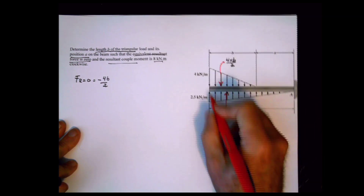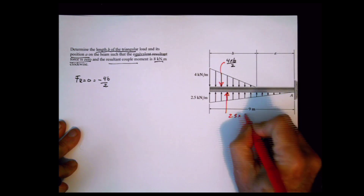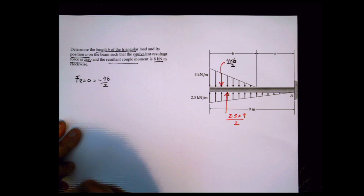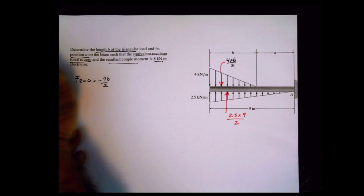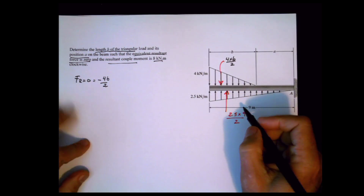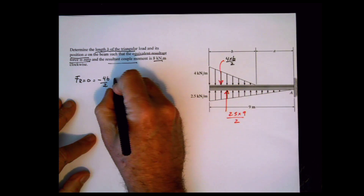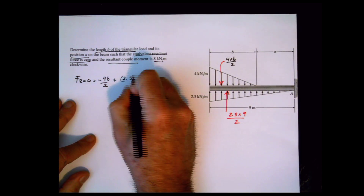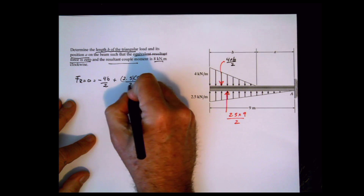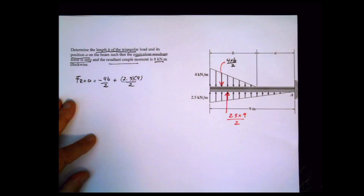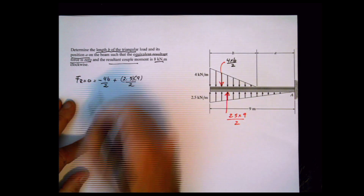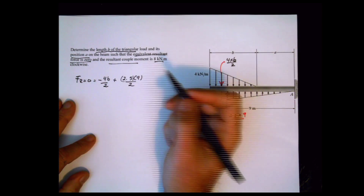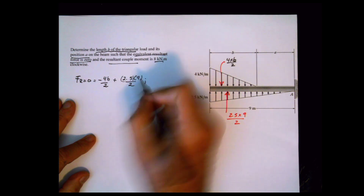We have 2.5 times 9 divided by 2 as a positive force, plus that, and negative 4b divided by 2, and this equals zero because that's what the problem is telling us. Here is b — the only thing we have to do is solve for b.